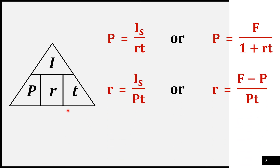Also, if we are looking for the value of the rate, all we have to do is divide the interest by the product of P and T. Therefore, we have the formula: rate is equal to the interest divided by P times T. Or, the rate is equal to F minus P, divided by PT.